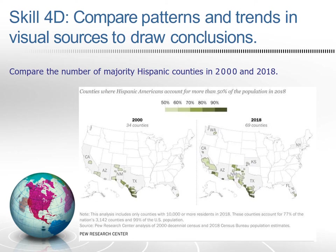Here's another example of having students practice the task verb 'compare.' Compare the number of majority Hispanic counties in the year 2000 on the left to the map on the right, titled 'Counties where Hispanic Americans account for more than 50% of the population in 2018.' How are the maps similar? How might the maps be different in terms of the data being shown?